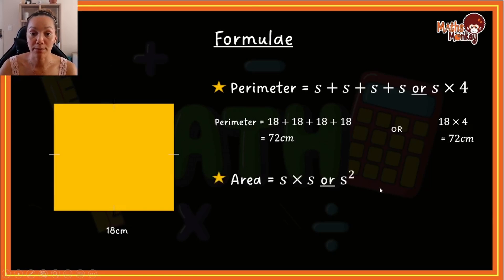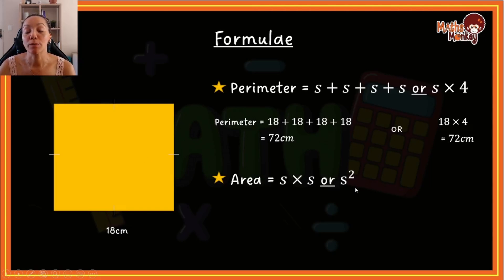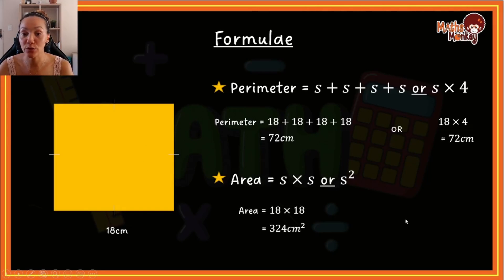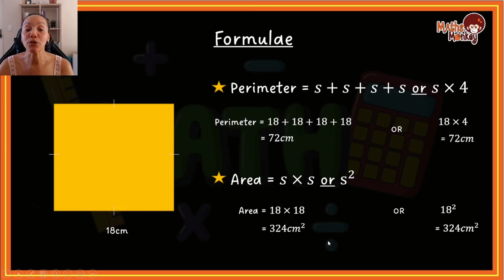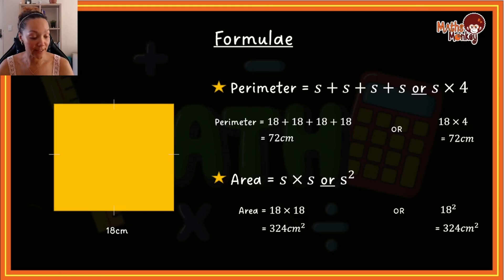The area of a square is equal to side multiplied by side, which can also be written as side to the power of two. So to calculate the area of this square, I would say 18 multiplied by 18, which gives me 324 centimeters squared. Or I can say 18 to the power of two — also 324 centimeters squared. Because we're calculating area, our units are squared.